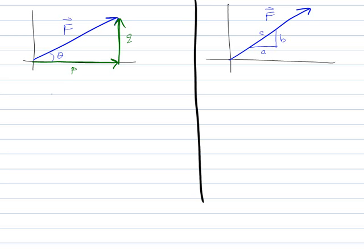So if I use trigonometry, I know that sine of theta is going to be opposite over hypotenuse. So q over the magnitude of F. So q is going to equal F sine theta. And I know that the cosine of theta is equal to the adjacent over the hypotenuse. So p is going to be F cosine theta.